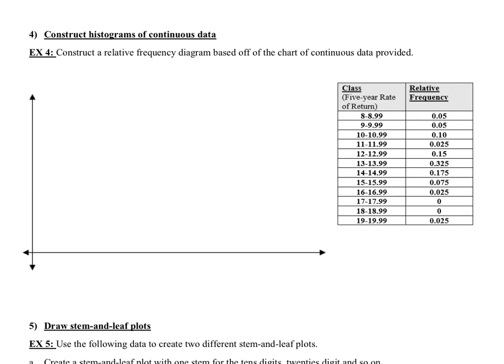Objective 4: constructing histograms of continuous data. Now we're looking at continuous data where the classes are intervals rather than single integers. We have a table with five-year rate of return classes and their relative frequencies already given, so we don't need to calculate them ourselves. We'll graph this histogram with the x-axis going in increments of 2, and the relative frequency y-axis going up in 0.05 increments to 0.30.